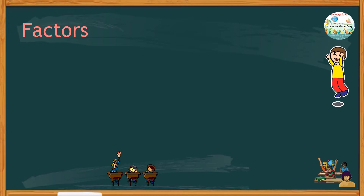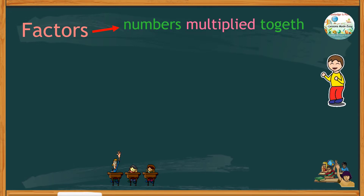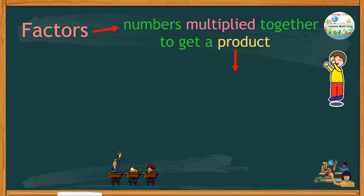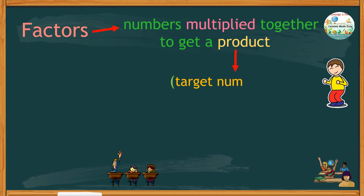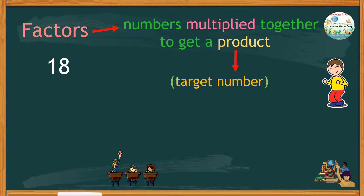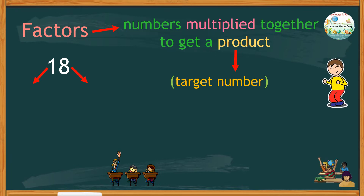Do you have any idea what factors mean? When we say factors, these are numbers multiplied together to get a product. The product is the target number. For example, if we have to find the factors of 18, we need to look for numbers that when multiplied together will give us a product of 18.